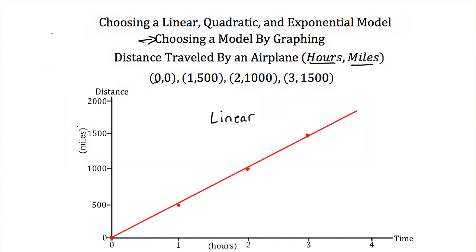Now I can find my linear model. It looks like y equals mx plus b. I need to find my slope first, so I'm going to pick two points: (0,0) and (1,500). I'm going to use the slope formula where m equals y2 minus y1 over x2 minus x1. I'm going to pick this as my second point and this one as my first. I'll get my slope to be 500 minus 0 over 1 minus 0. So my slope is 500.